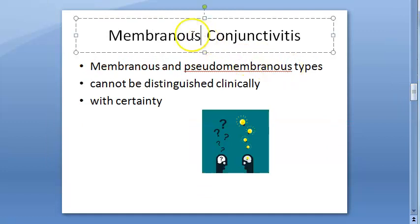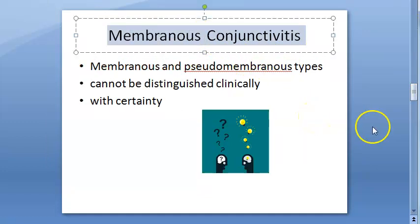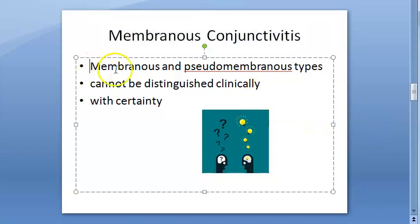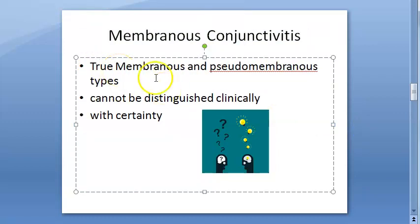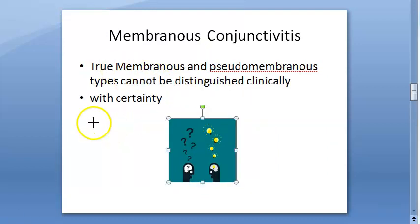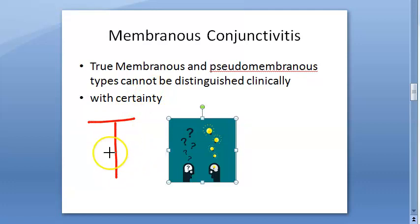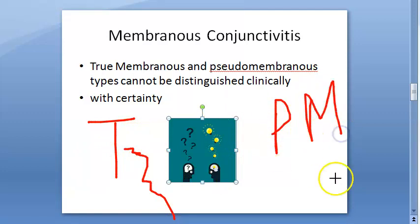It is very difficult to differentiate true membrane from pseudomembrane. True membranous and pseudomembranous types cannot be distinguished easily. However, one thing to remember: the true membrane caused by Corynebacterium diphtheriae is difficult to remove, and if removed it will lead to bleeding. The pseudomembrane is easier to remove, is much thinner, and will not lead to much bleeding.